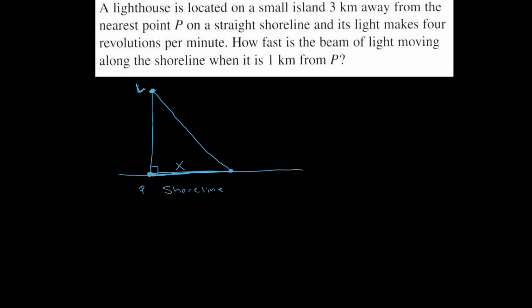So in order to answer this, we're going to first want to establish a relationship between the variables in question. Now it turns out that, I didn't label this but that's three kilometers, right? So that's not varying. The distance from point P to the lighthouse—this angle is varying, and we're actually told information about that angle that relates to the lighthouse making four revolutions per minute.